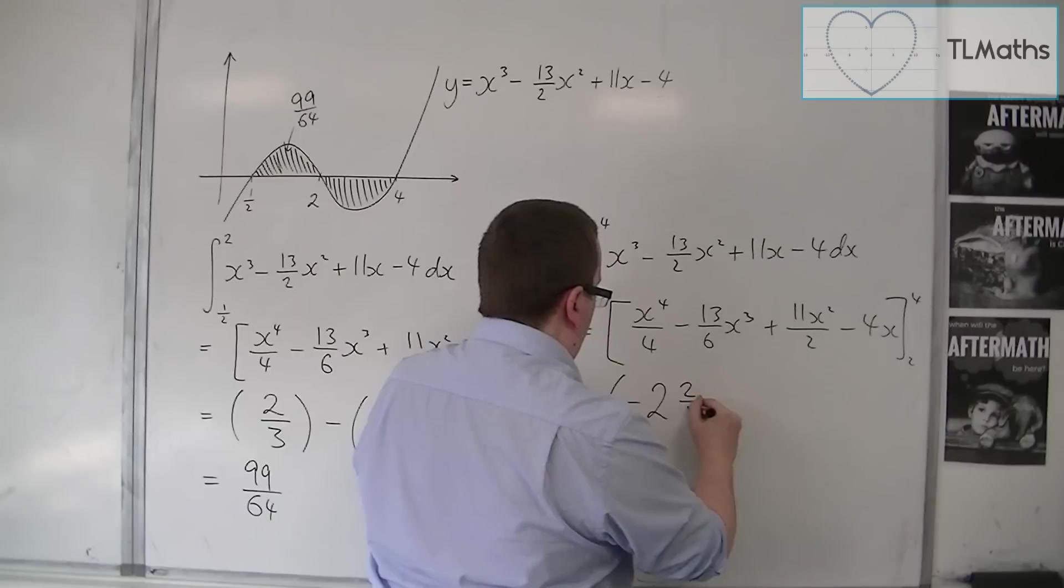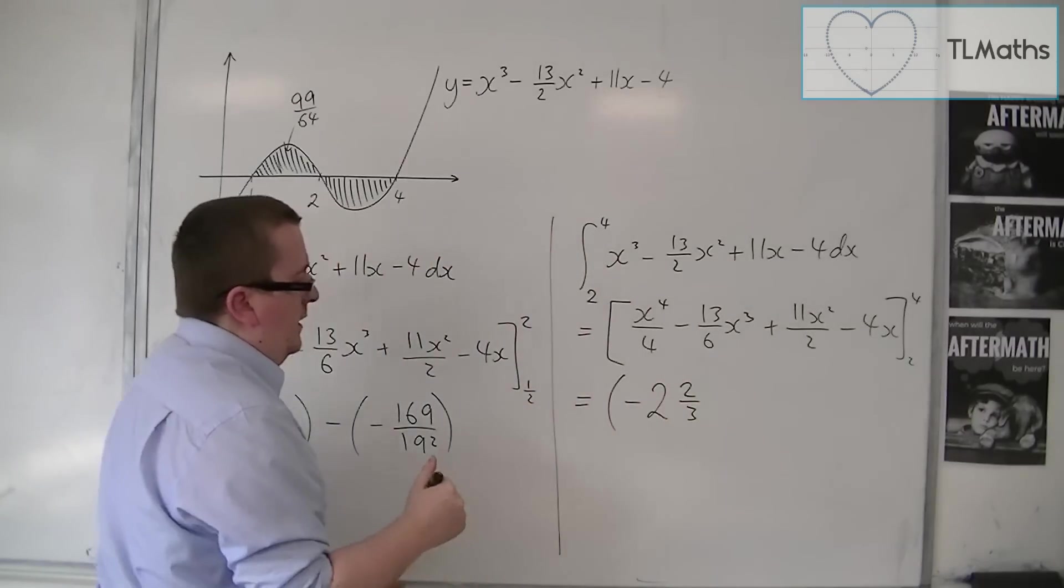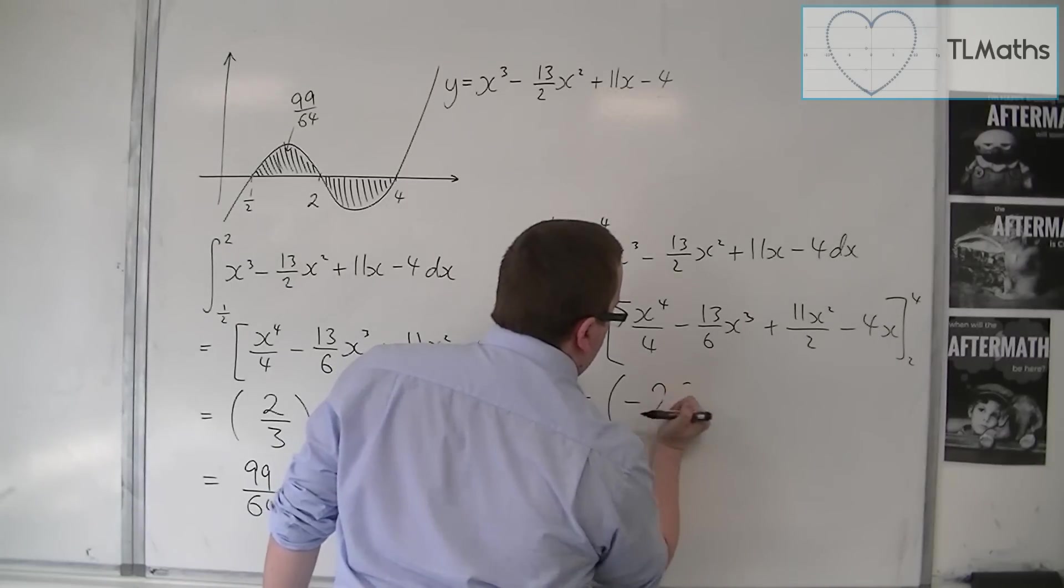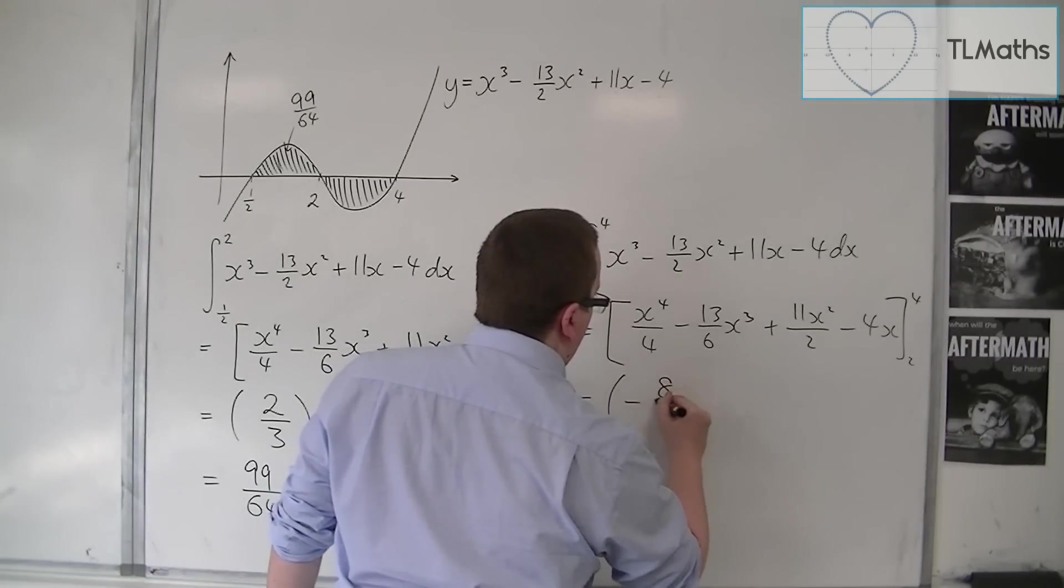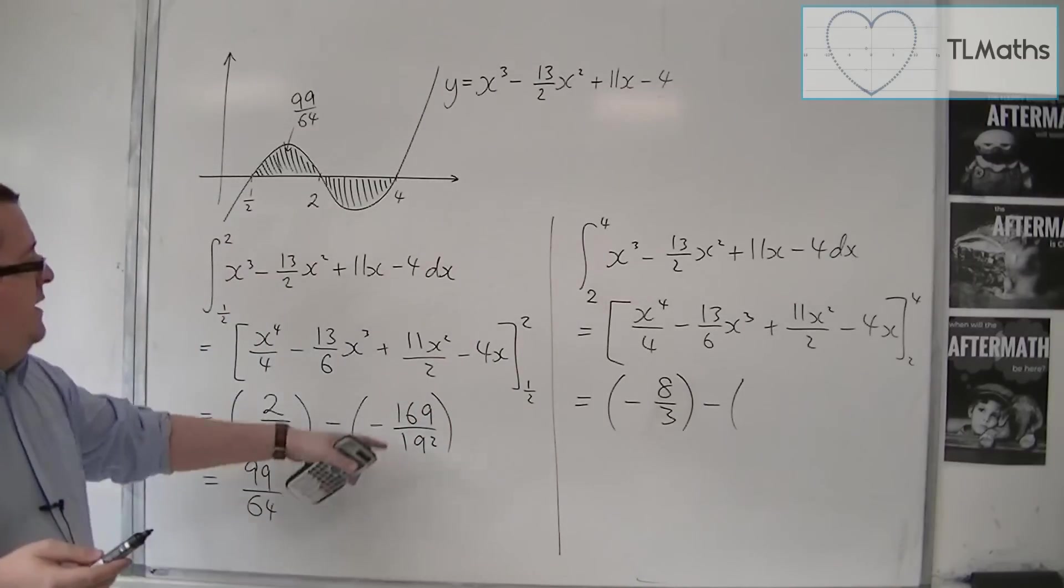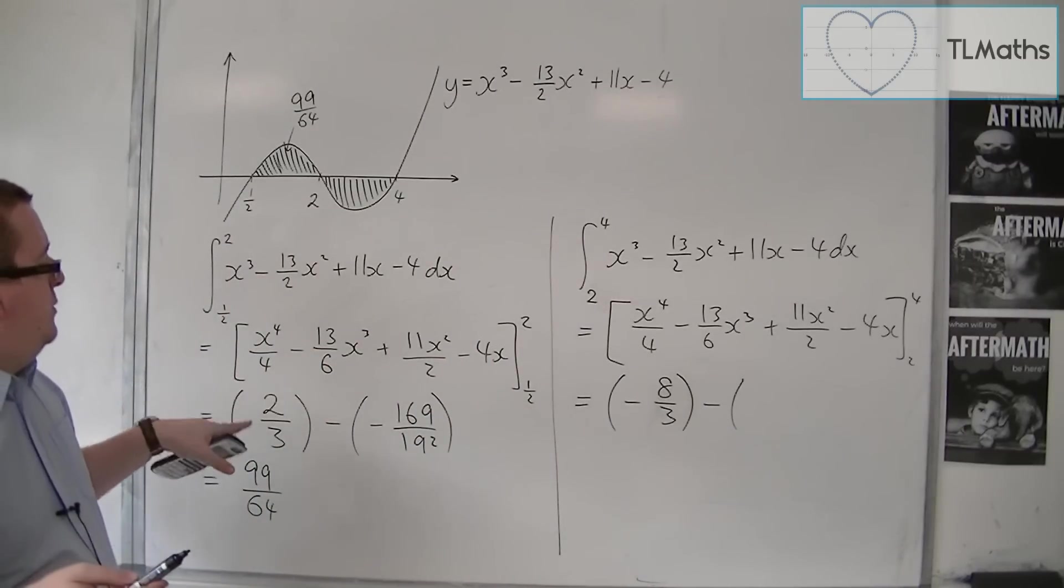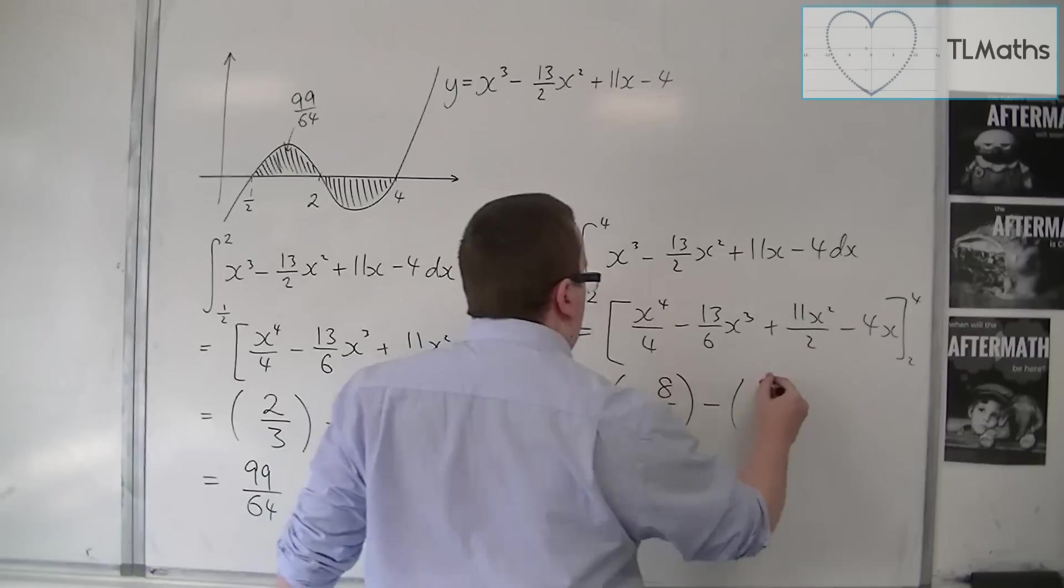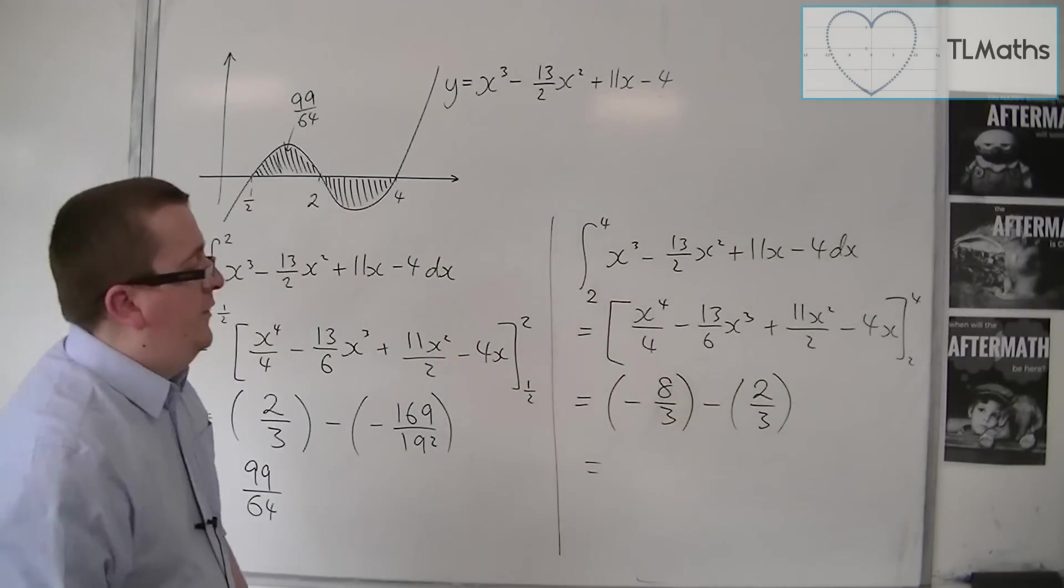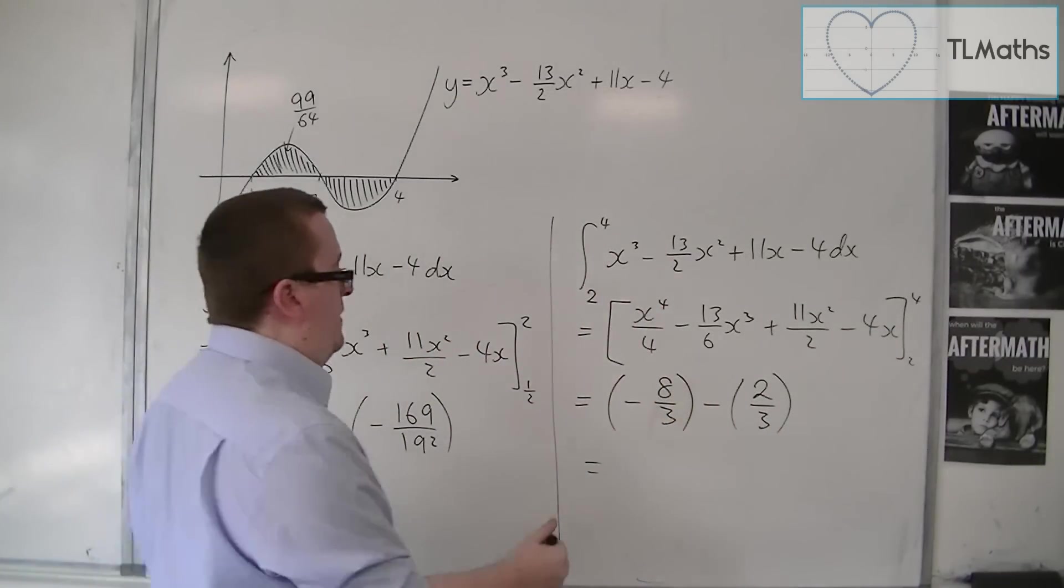So minus 2 and 2/3, so we have minus 8/3. And then take away substituting in 2, now I already have substituted in 2 here, so that was 2/3. So we have minus 8/3 take away 2/3, and that's minus 10/3.